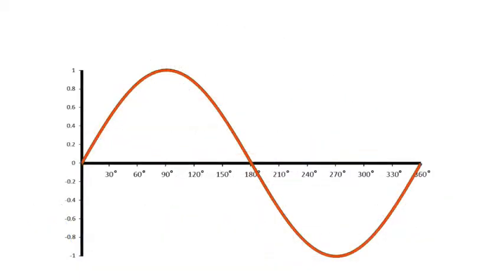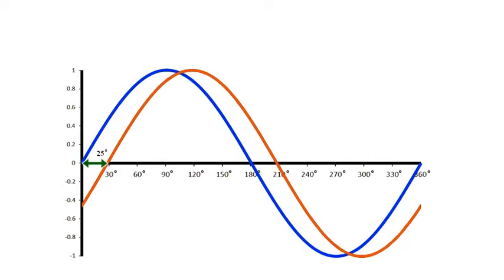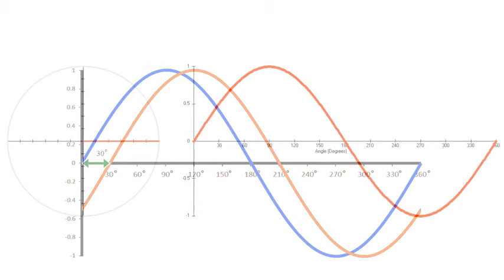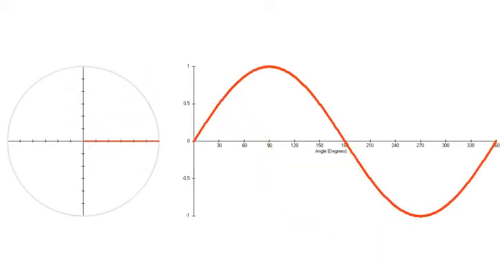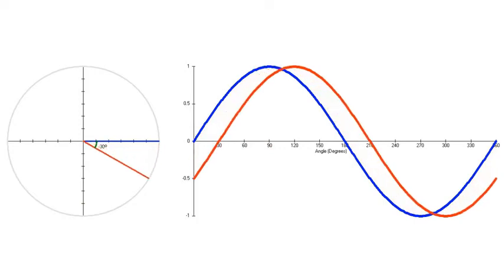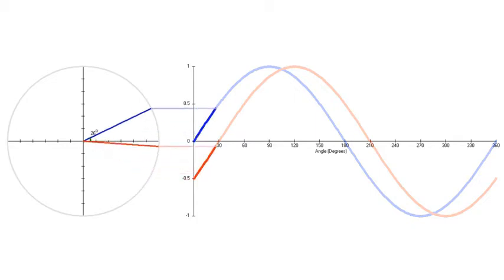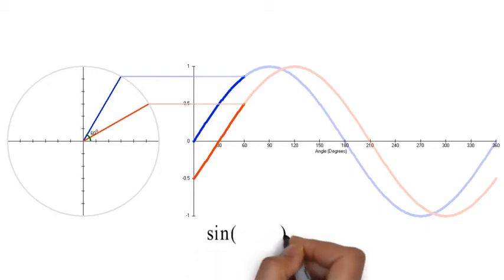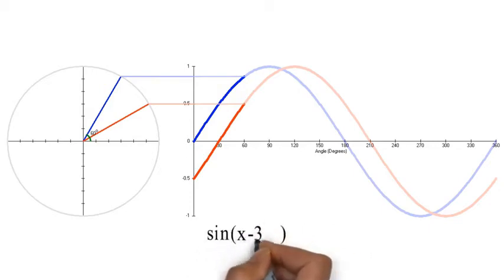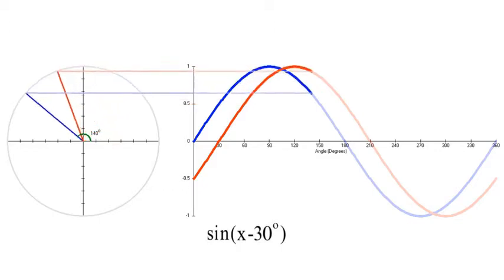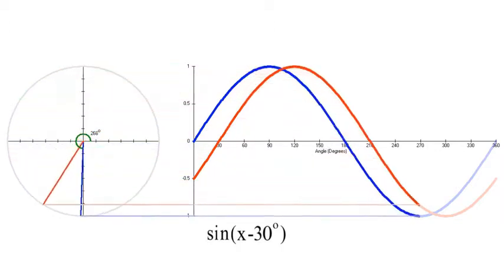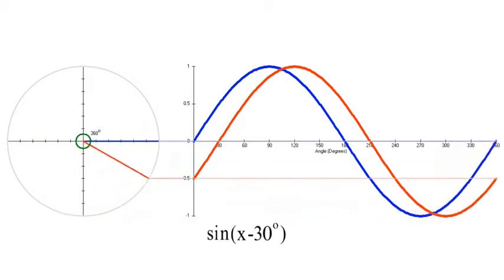So back to our question: how do we represent a phase shift of 30 degrees mathematically? The key is to notice that the second sine wave is lagging the first by 30 degrees. If at an angle of 30 degrees the amplitude of the blue sine wave is 0.5, the red sine wave won't reach 0.5 for another 30 degrees, when its angle is 60 degrees. Therefore, the equation for the red sine wave is sine of the angle x minus 30 degrees. In other words, the amplitude of the red sine wave at its current angle is the same as what the amplitude of the blue sine wave was 30 degrees ago.